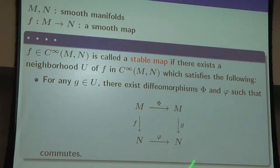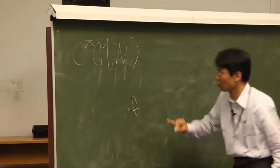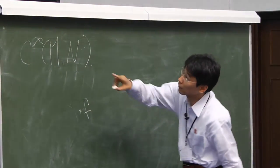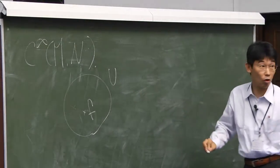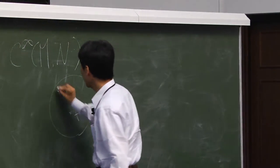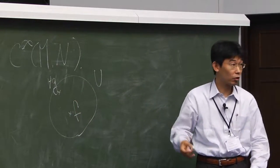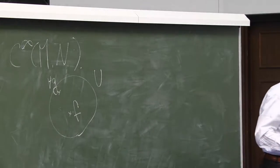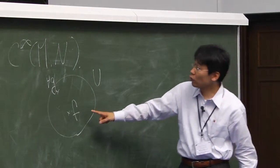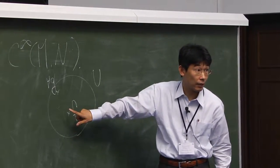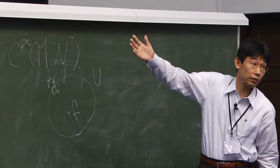A stable map is defined as follows: there exists a neighborhood U of F in the space of maps with the Whitney topology such that for any map G in U, F and G are left-right equivalent. This means if you perturb F in the space of maps slightly, it doesn't change — this is the meaning of 'stable.'